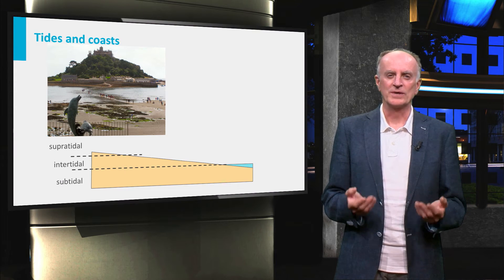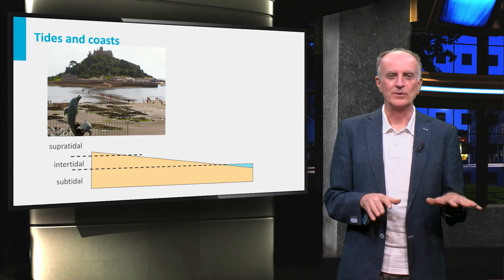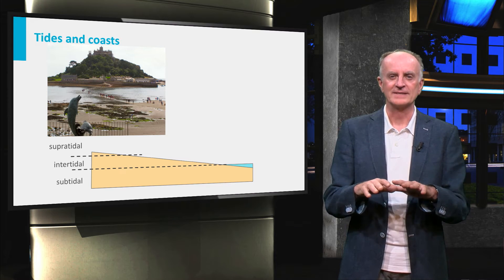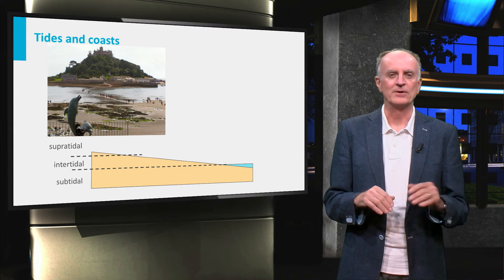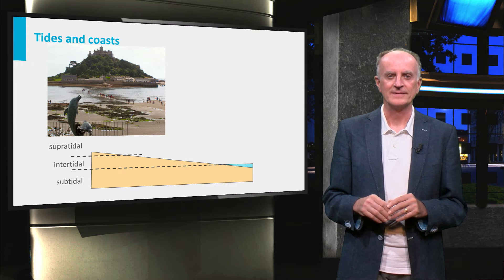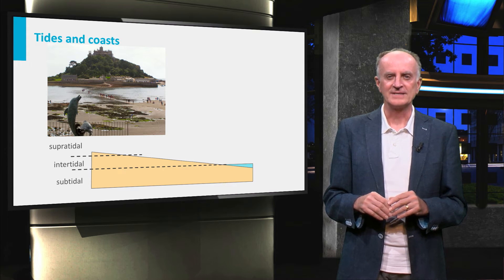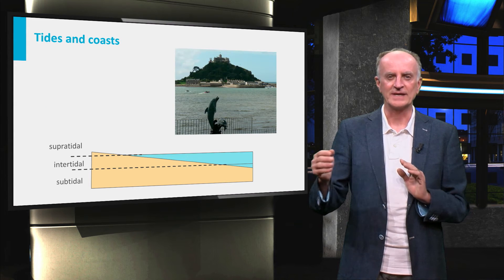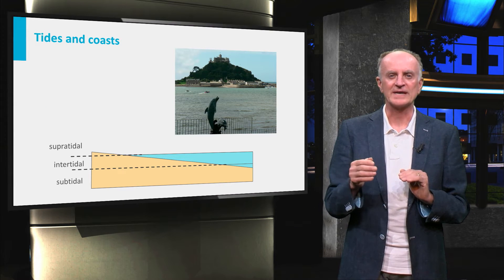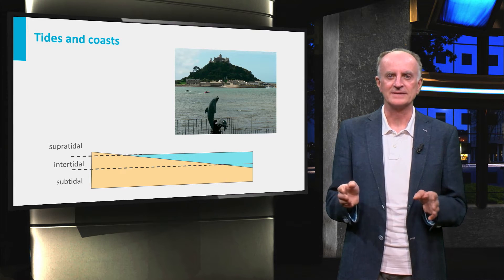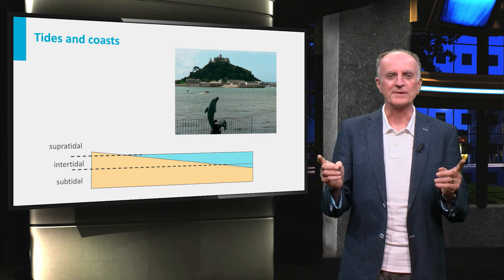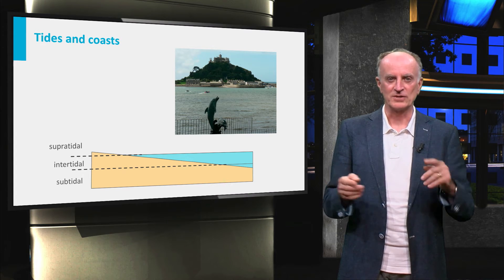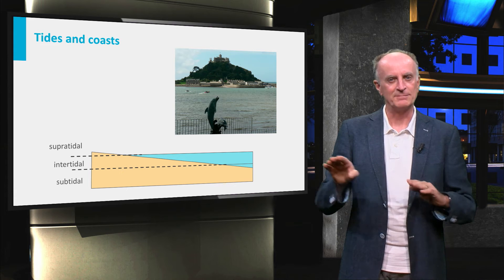We will begin looking at coasts away from deltas and estuaries, which are dominated by the action of tides. This means that waves are of subordinate importance. Tides cause changes of sea level and thereby a gradual transgression and regression of the water covering the intertidal domains. The width of the area covered and uncovered during tides is a function of the height of the tide and the steepness of the coast.